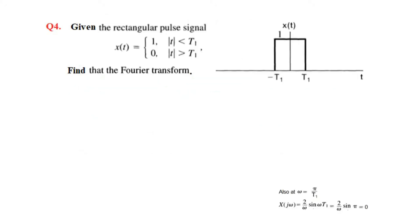We come to question number 4. We have a pulse given whose amplitude is 1 for t less than t1, that is for t between positive t1 and minus t1, its value is 1. Its value is 0 for all other values of t — it is 0 beyond t1 and before minus t1. In this case, we need to find the Fourier transform.